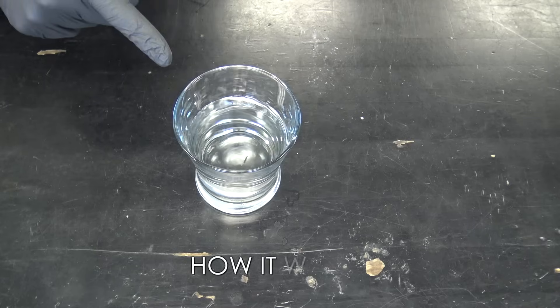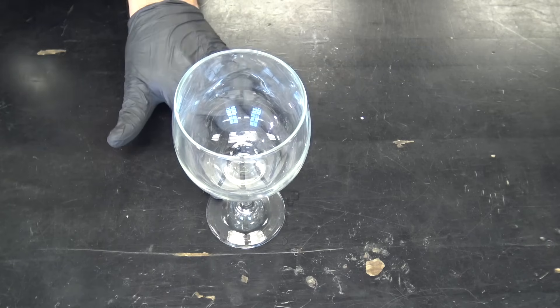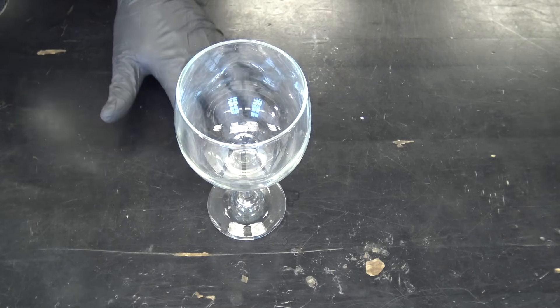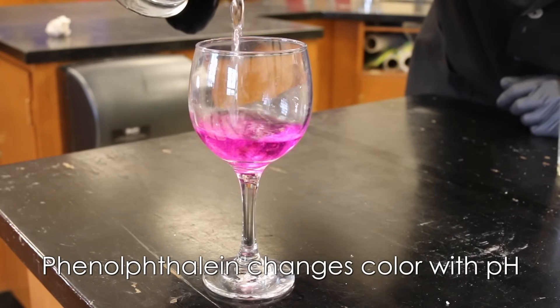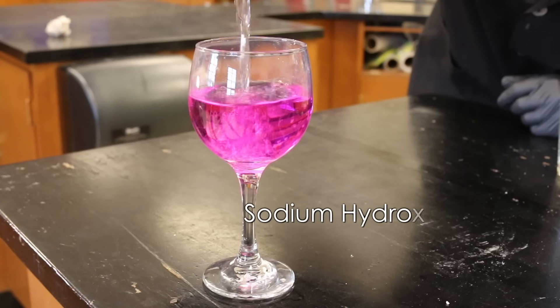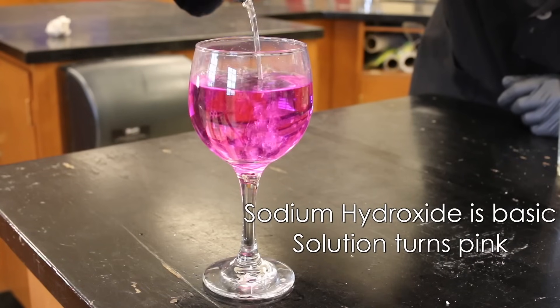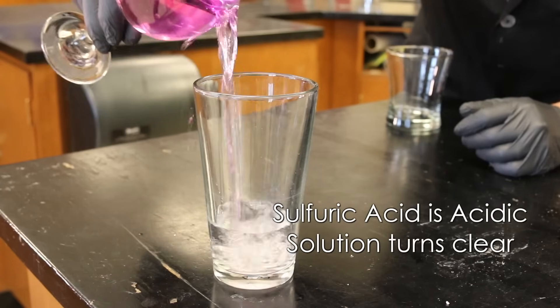We've got our water with our phenolphthalein in it. And next, we've got our sodium hydroxide, which is very basic. So here we go. We're going to dump it in, see what happens. Phenolphthalein is an acid-base indicator, so it changes colors when it turns basic. It changes to pink. When it's acidic, it's clear. So that's how we're getting these color changes.